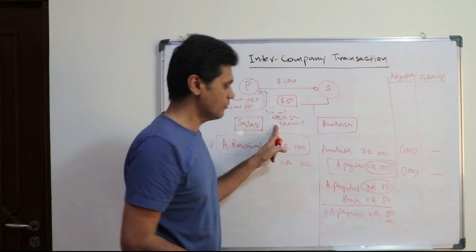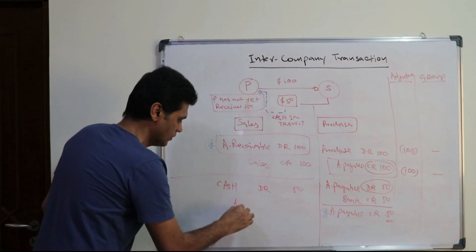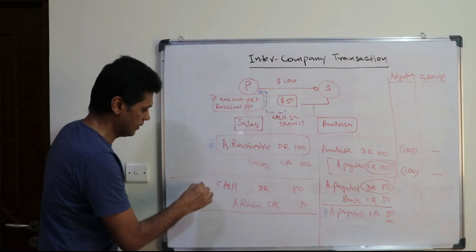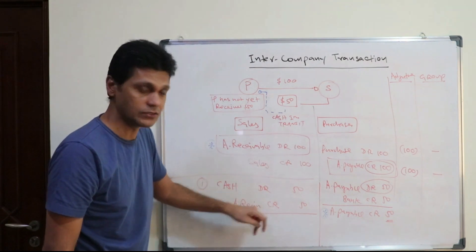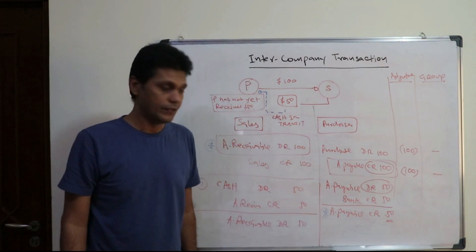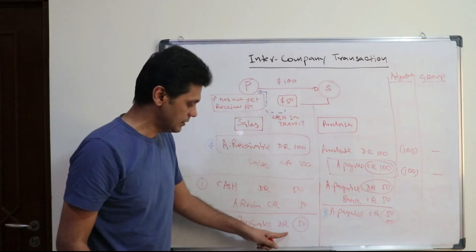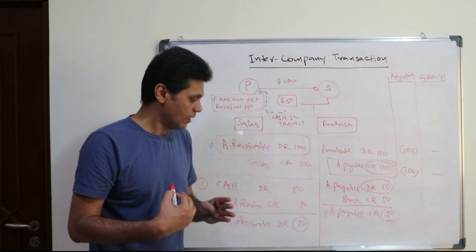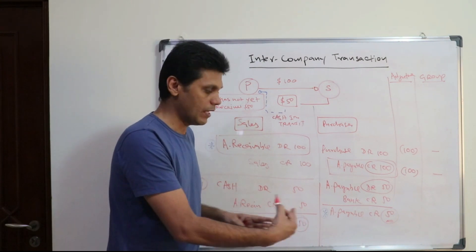How will you adjust this particular transaction? First, you need to debit cash by $50 and accounts receivable has to be credited by $50. Thereby, after recording this particular transaction in the group financial statement, your accounts receivable — with the debit and credit balances — the net accounts receivable balance will be debit $50. Now when you compare the accounts receivable and accounts payable, the balances are equal and matching. So now the second adjustment has to be made to eliminate these two particular balances — you need to eliminate the intercompany receivable and payable balances.